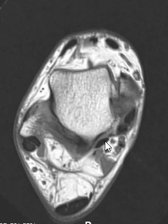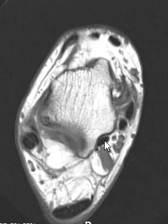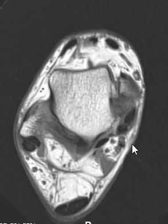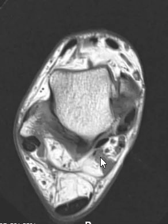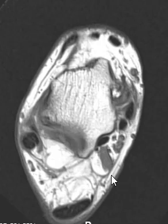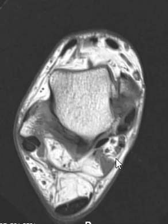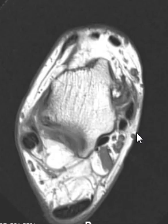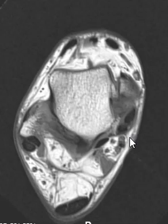It's posterior to the flexor hallucis tendon as we go lower, and it's behind the tarsal tunnel. These are the nerves and vessels of the tarsal tunnel right here, so it's at the back border of the tarsal tunnel. This accessory muscle can produce mass effect on that and predispose to tarsal tunnel syndrome. This is the flexor digitorum accessorius longus accessory muscle — thank you very much.